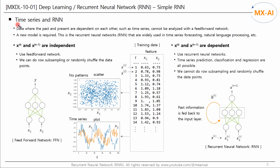Now let's take a quick look at time series data and recurrent neural networks. Data where the past and present are dependent on each other, such as time series, cannot be analyzed with a feedforward network — a new model is required. This is the Recurrent Neural Network, RNN, which is widely used in time series forecasting, natural language processing, and more.